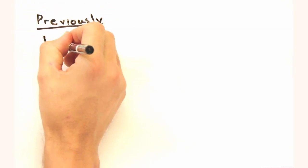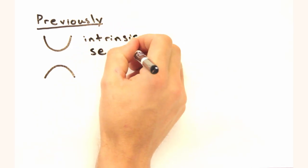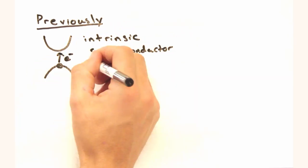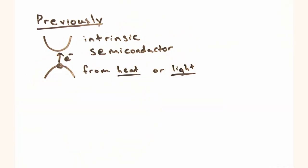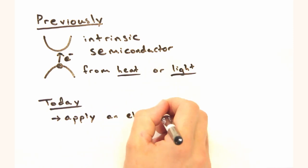Alright gang, previously we saw how carriers in an intrinsic semiconductor are excited into the conduction band through exposure to either heat or light. Today, our goal is to develop an understanding of how such a material will behave in an electric field.